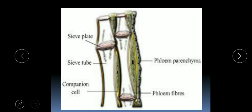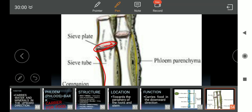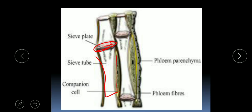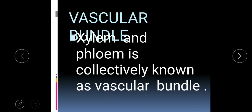Here are all the components of phloem: the sieve tube with the sieve plate having perforations, with sieve tube cells arranged one over the other; the companion cell; the phloem parenchyma, which provides food to the rest of the phloem; and the phloem fibers, which provide mechanical strength and support to the other components.